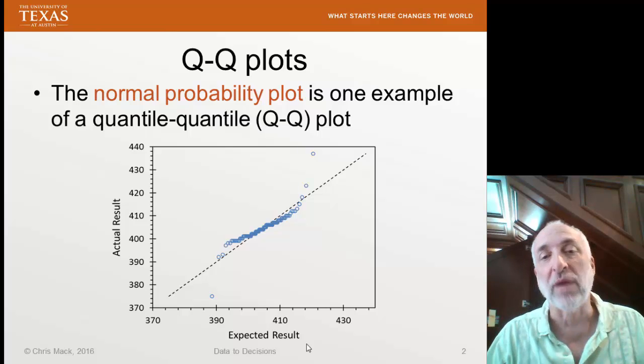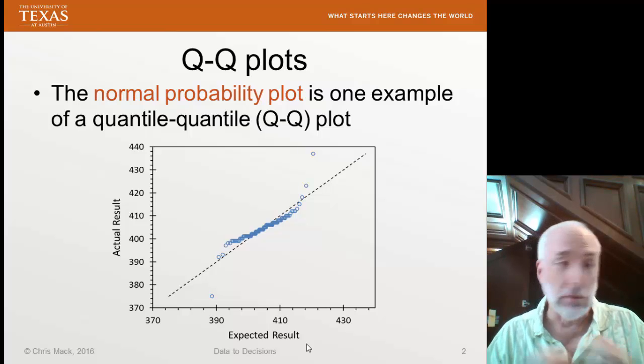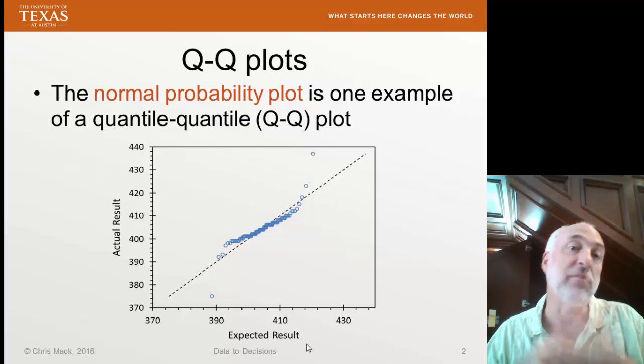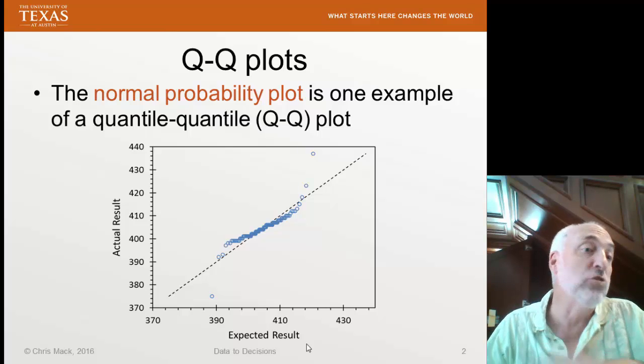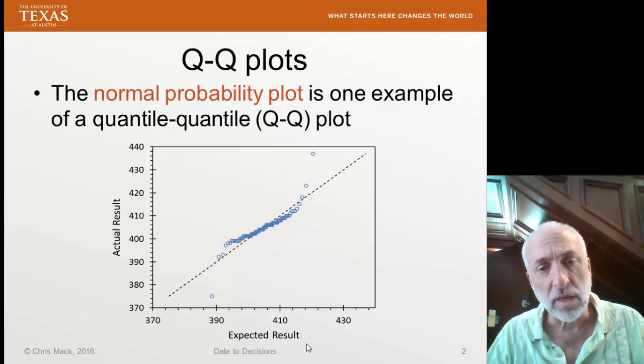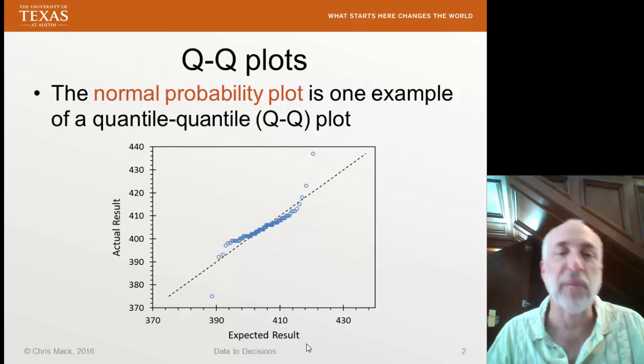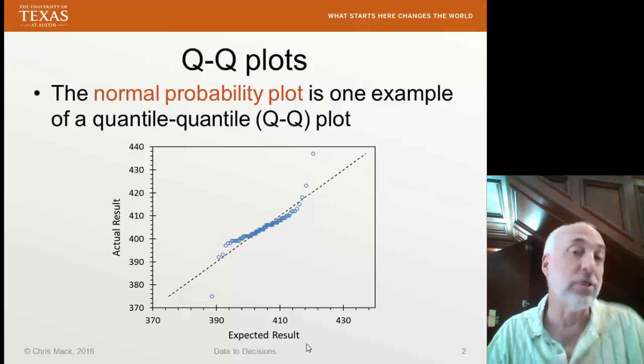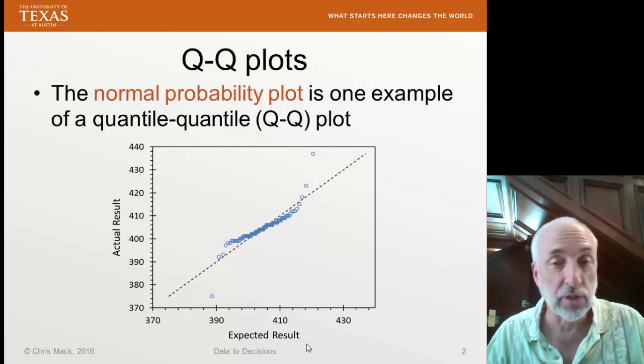If we assume a normal probability distribution, so the results of this experiment have a mean and a standard deviation that is normally distributed about that mean. If I do, then I can calculate the expected results. I plot expected versus actual, and I should get a straight line, Y equals X.